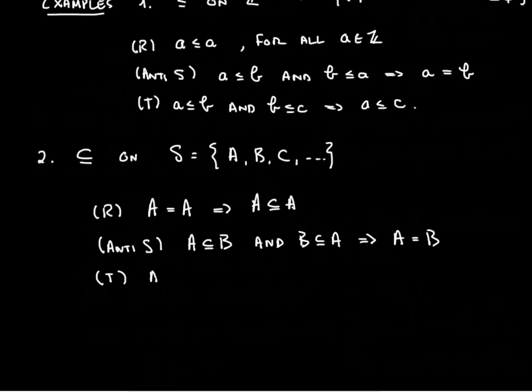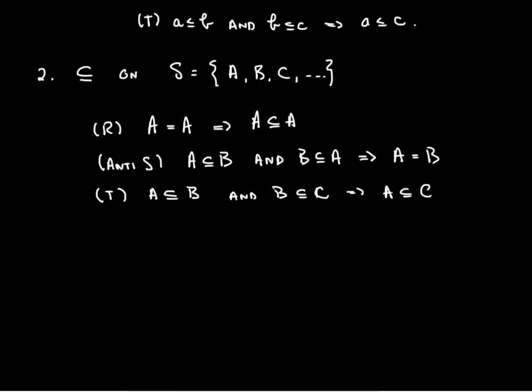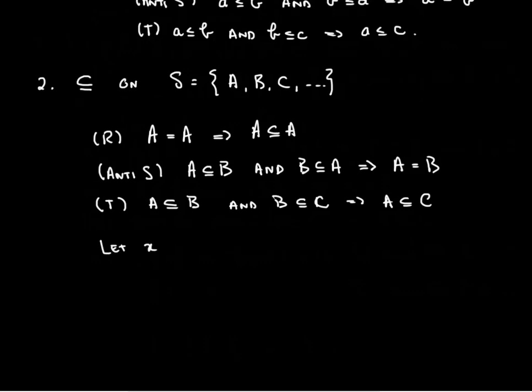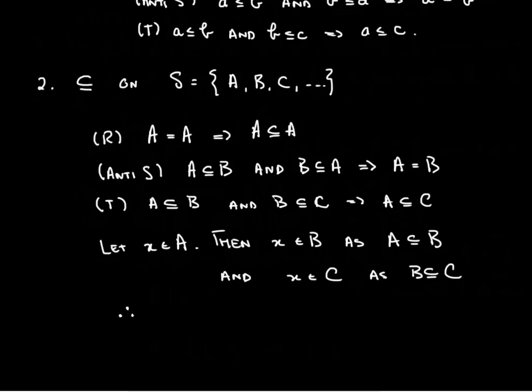And it is transitive because if we have A is a subset of B and B is a subset of C, then necessarily we have that A is a subset of C. You could prove this. This is fairly straightforward. By starting with an arbitrary element x of A, then this means that x is an element of B, as A is a subset of B. And you could say that x is an element of C, as B is a subset of C. So you can conclude that A is a subset of C. Because every element of A is also an element of C.